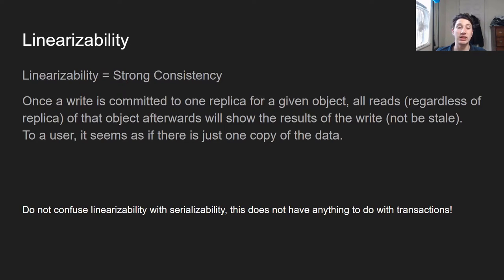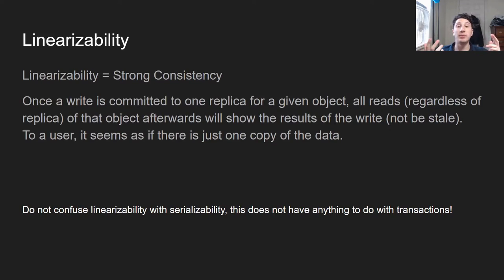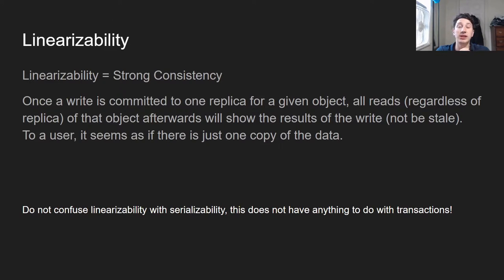For example, if I have two writes and my friend has two writes, they may be interleaved such that one of my writes wins and one of his wins, and then our database is kind of in a weird state. But you are still reading technically the most up-to-date write per object. So linearizability is only a guarantee per object, unlike anything to do with serializability or transactions.